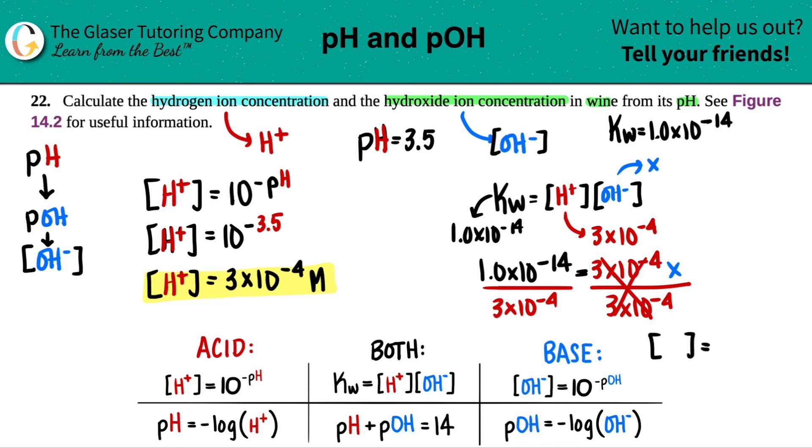Maybe I'll just put that down here. OH-. Calcetown, 1 times 10 to the negative 14th divided by 3 times 10 to the negative 4th.